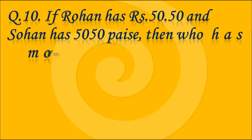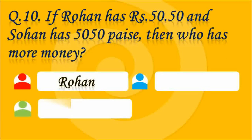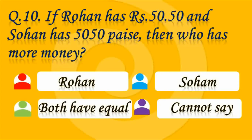Question number 10. If Rohan has Rs. 50 and 50 paise and Shohan has 50-50 paise, then who has more money? Options are Rohan, Shohan, both have equal, or cannot say. Answer C — both have equal. Rohan has Rs. 50 and 50 paise, and when we convert Shohan's paise into rupees, it also becomes Rs. 50 and 50 paise. So option C is correct.